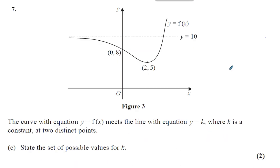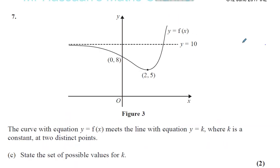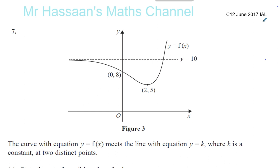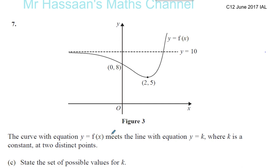So I've been asked to answer part C of question 7 from June 2017, IAL C1-2. Now the curve with the equation Y equals F of X meets the line with the equation Y equals K, where K is a constant at two distinct points. State the set of possible values for K.